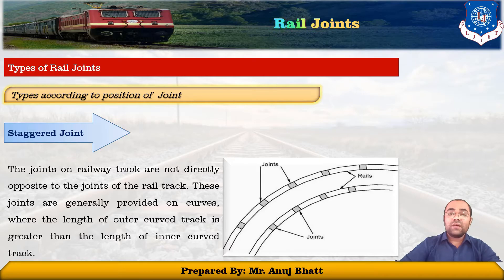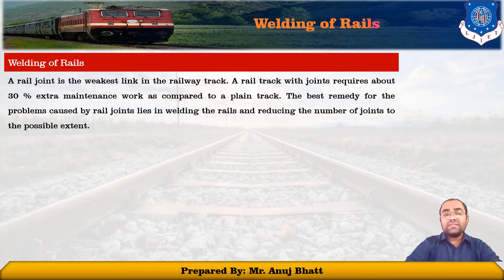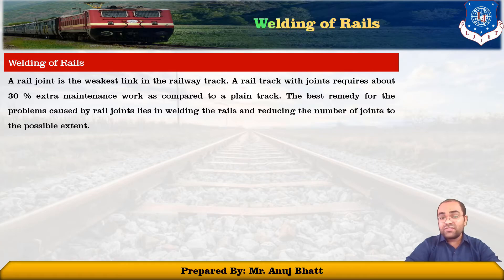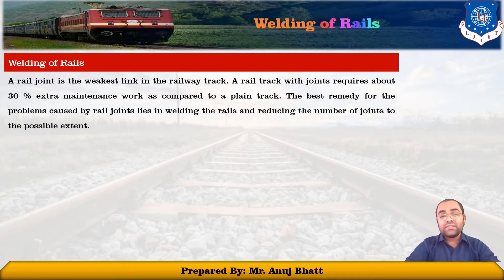Now let's discuss about the welding of rails. A rail joint is the weakest link in the railway track, and a railway track with joints requires about 30% of extra maintenance work as compared to the plain track. The best remedy for the problems caused by the rail joints lies in the welding of the rails, reducing the number of joints to the possible extent. That is why we provide the welding of rails.